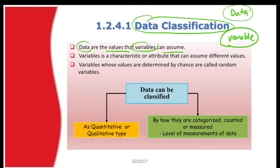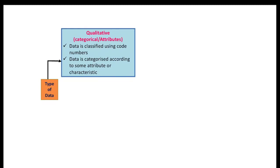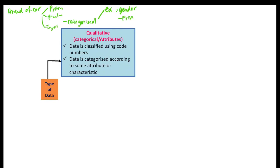Data can be classified into quantitative and qualitative. First, qualitative — also called categorical or attributes data. Qualitative data is classified using code numbers, or categorized according to some attribute or characteristic. For example, gender can be categorized as female and male — that is qualitative data. Another example: brand of car can be categorized as Proton, Toyota, and so on — that is categorical or qualitative data.